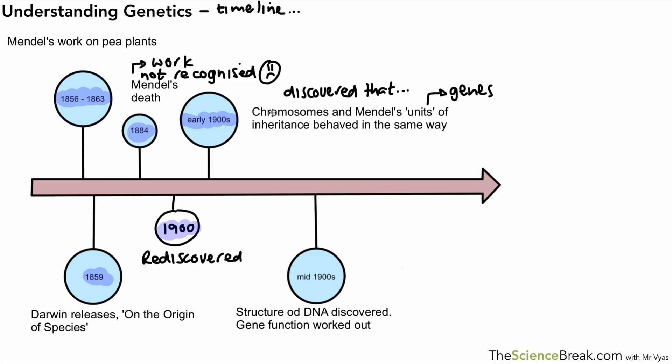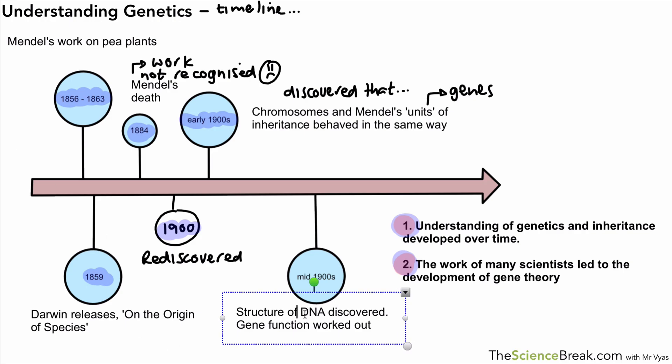The last thing is that we have the discovery of the gene and gene function. That was worked out, and what we're trying to say by this whole video, actually, is that there were two main things to take into consideration when we look at the discovery of, or the understanding of genetics. And those are that the discovery and understanding has developed over time, and it's involved many scientists. Just got a spelling mistake there to correct. But it involved the work of many scientists, and in fact, more than we just outlined in this slide here.